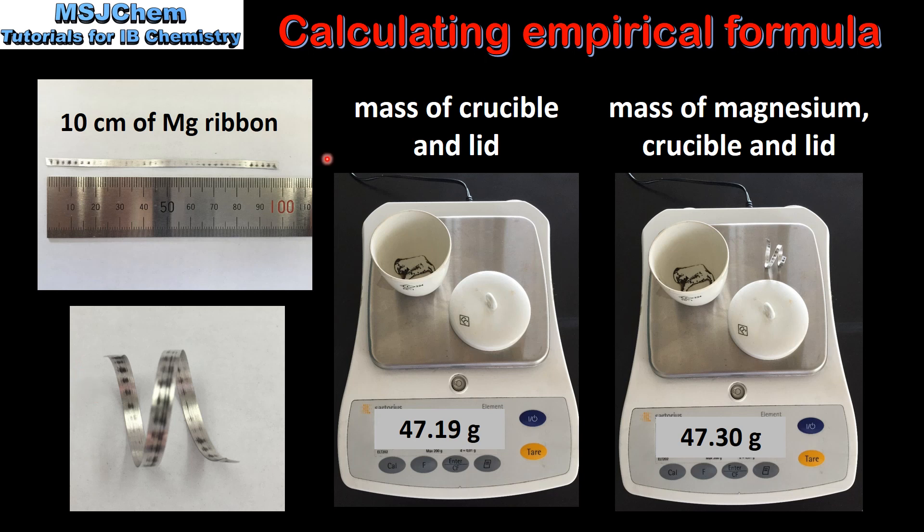To calculate the empirical formula, we must record the mass of the crucible and lid, and the mass of the magnesium, crucible, and lid. As you can see, the mass of the crucible and lid is 47.19 g, and the mass of the magnesium, crucible, and lid is 47.30 g.